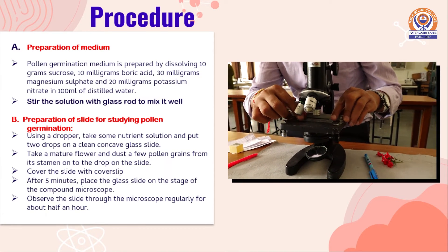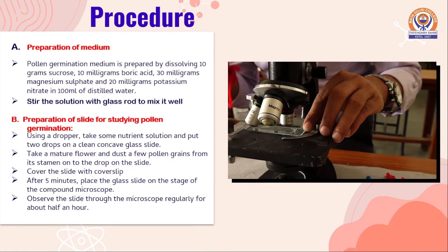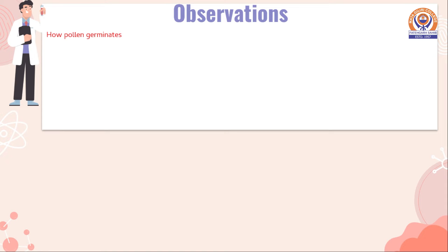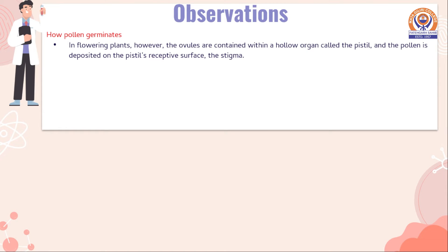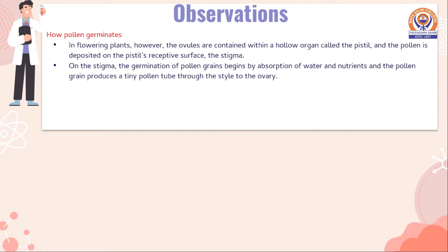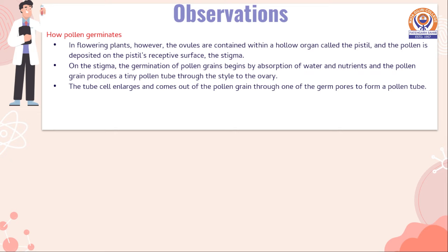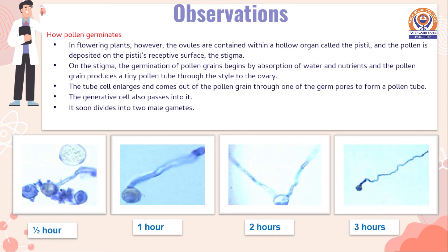Observe the slide through the microscope regularly for about half an hour. First, we need to know how pollen germinates. In flowering plants, the ovules are contained within a hollow organ called the pistil and the pollen is deposited on the pistil's receptive surface, that is the stigma. On the stigma, the germination of pollen grains begins by absorption of water and nutrients, and pollen grains produce a tiny pollen tube through the style to the ovary. The tube cell enlarges and comes out of the pollen grain through one of the germ pores to form a pollen tube. The generative cell also passes into it and is soon divided into two male gametes.